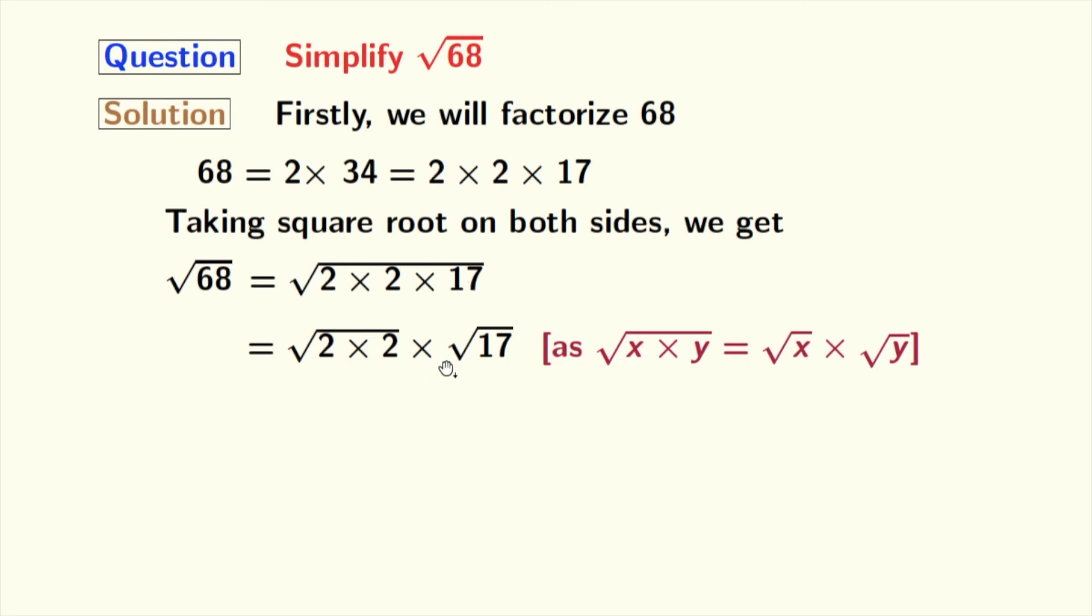Now, from the first square root we get 2, and the second square root, square root of 17, remains the same. In the first square root we have used the rule: square root of a times a equals a. Here, a is 2.